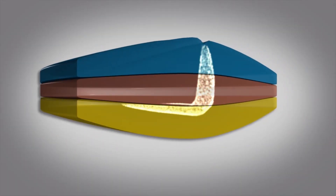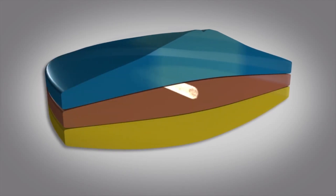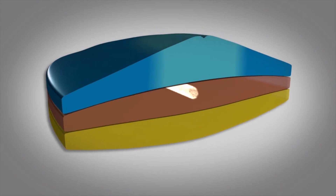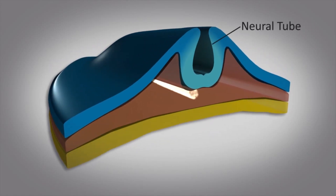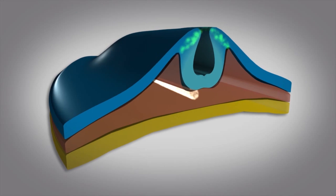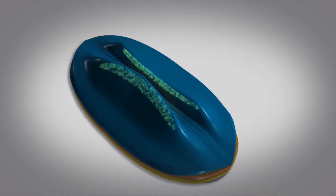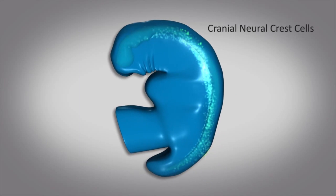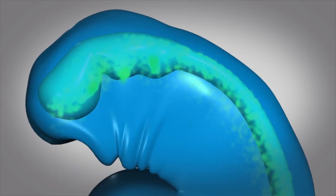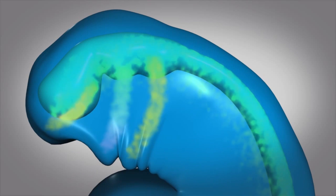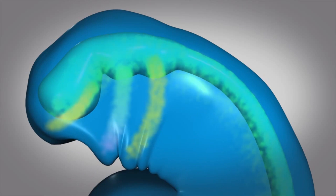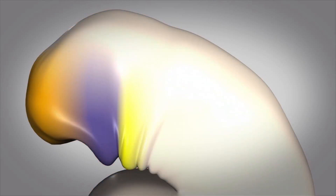A thickening occurs above the notochord, which is the neural plate, the edges of which elevate to form the neural fold and finally the neural tube. The cells of the neural tube are the neural crest cells, which span along the entire length of the fetus cranio-caudally, and in the cranial region are known as the cranial neural crest cells. These cranial neural crest cells migrate from the back to the front and contribute to structures of the head and neck like bone, cartilage and nerves.